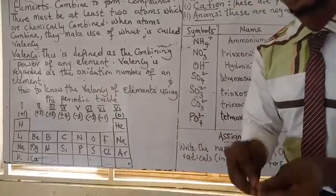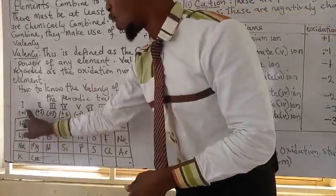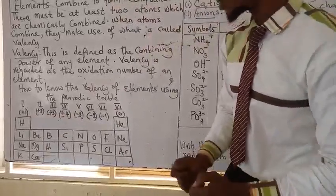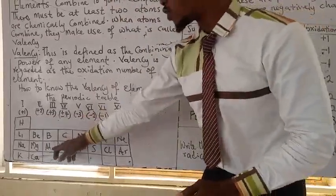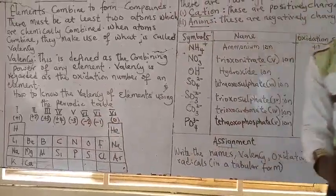So in case I ask you what is the valency of sodium, since sodium belongs to group 1, it is plus 1 or 1. While that of aluminium, since it belongs to group 3, it is plus 3. So that is a better way to understand.